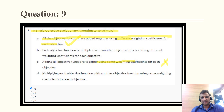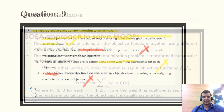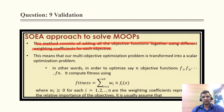Option C says 'using the same weighing coefficient,' which is invalid. Similarly, options about multiplying are also incorrect as there is no provision for multiplication. Therefore option A is correct. The validation: this method consists of adding all objective functions together using different weighing coefficients for each objective.